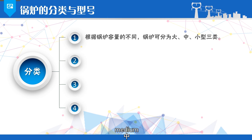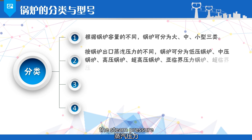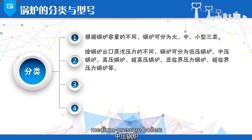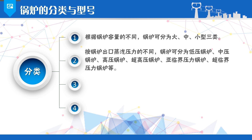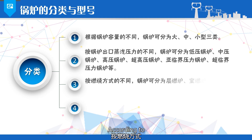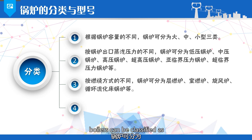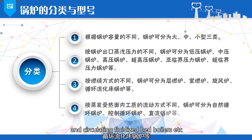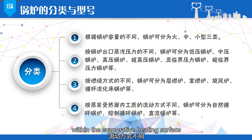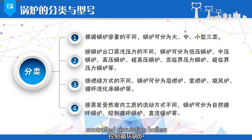Based on the boiler capacity, boilers can be classified into three categories: large, medium, and small. According to the steam pressure at the boiler outlet, boilers can be categorized as low-pressure, medium-pressure, high-pressure, ultra-high-pressure, subcritical pressure, and supercritical pressure boilers. According to the combustion methods, boilers can be classified as grate-fired boilers, tumble-fired boilers, cyclone boilers, and circulating fluidized bed boilers. Based on the flow method of the working medium within the evaporative heating surface, boilers can be categorized as natural circulation boilers, controlled circulation boilers, and once-through boilers.